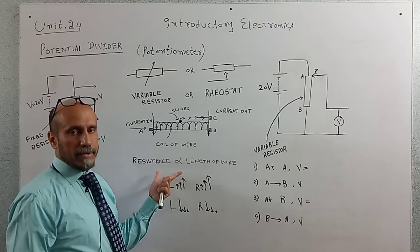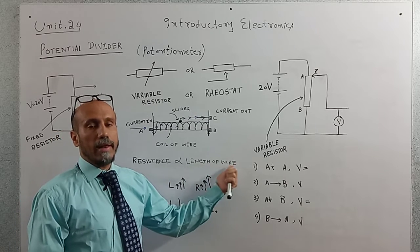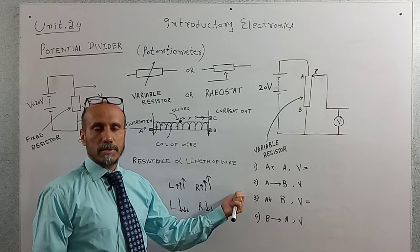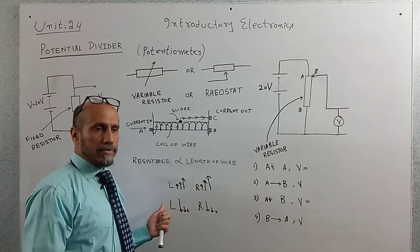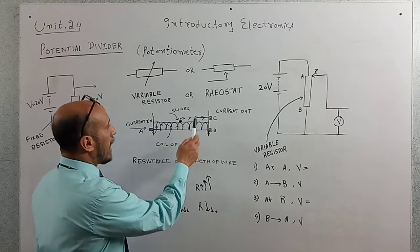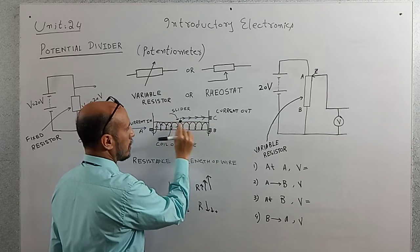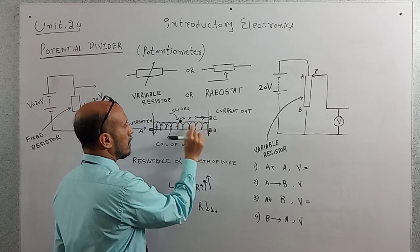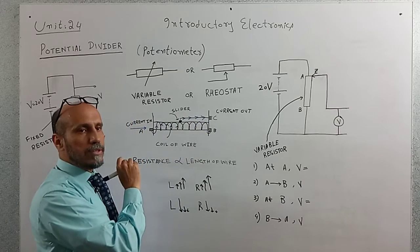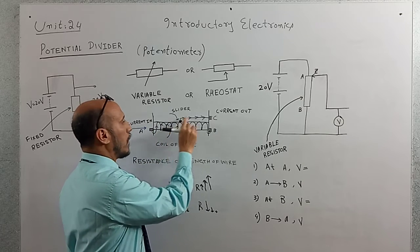We already know that the resistance of a wire is directly proportional to its length. So when the length increases, resistance also increases, and when the length decreases, resistance also decreases. By moving the slider along the coil, we change the effective length of the wire, which changes the resistance.